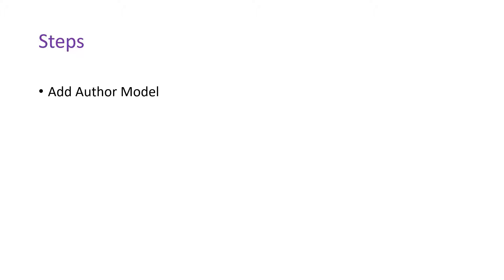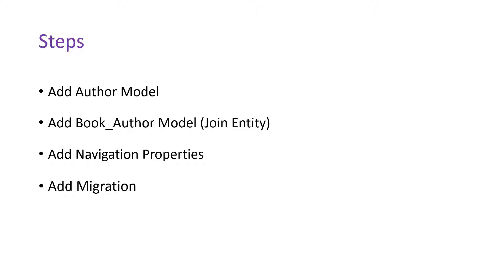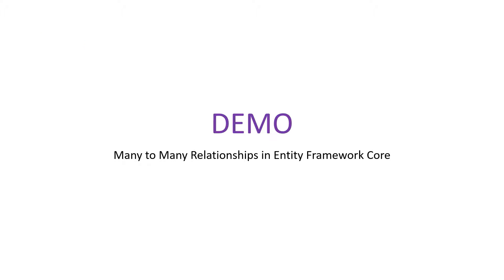For that, you'll add a new model named BookAuthor — I'll use the underscore just to distinguish the join models or tables from the normal models or tables. Then you'll add the navigation properties, add a migration, and update the database. Let us go to Visual Studio.